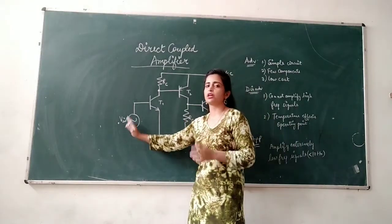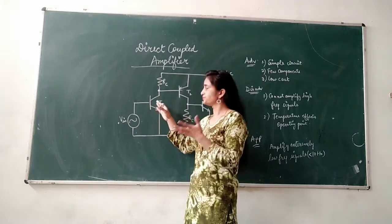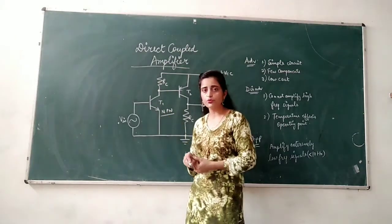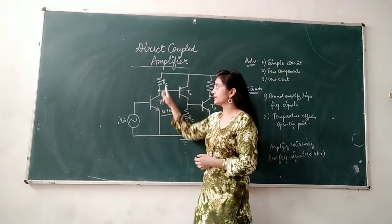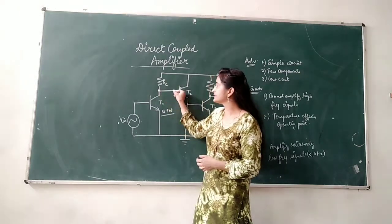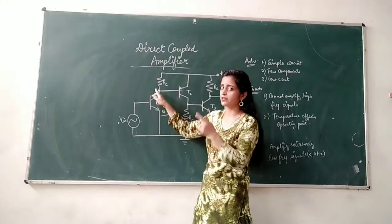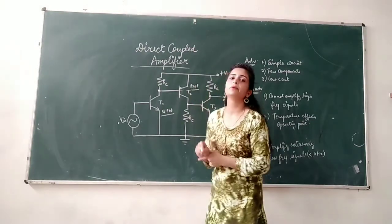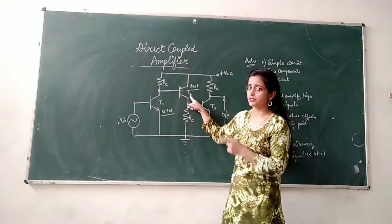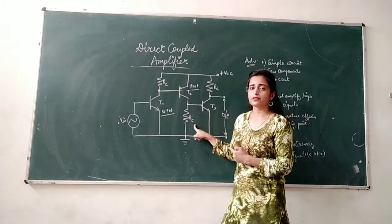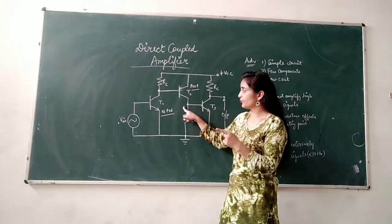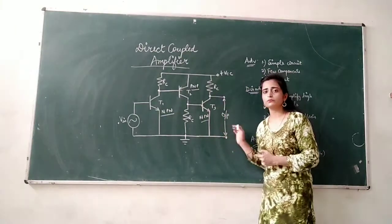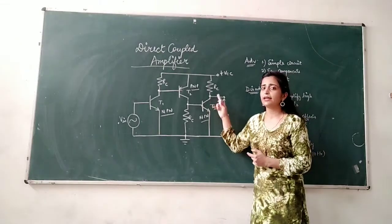Initially, the input signal is directly provided to the base of transistor T1, which is an NPN transistor. At the output side, at the collector resistor, another signal is connected — the output of the first transistor is fed directly to the base of the second transistor, which is a PNP transistor. From the collector of this PNP transistor, an RC resistance is utilized, and the output of the second stage is coupled to the third stage, which is again an NPN transistor, with the load connected at the collector output.